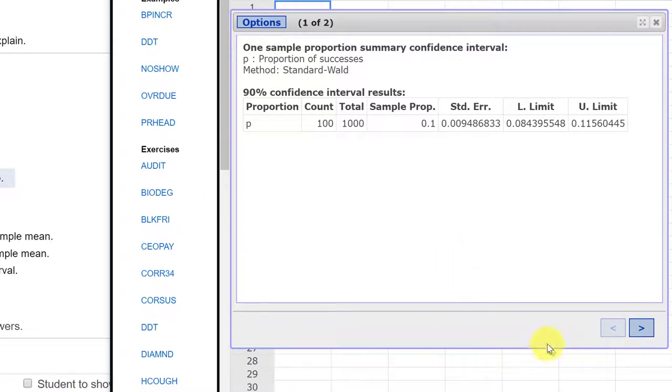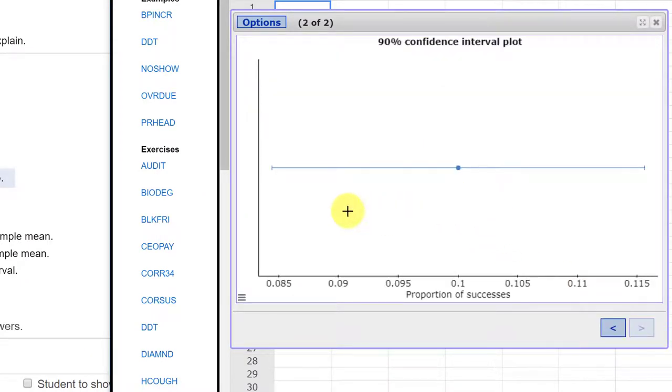And over here if we look at our stat crunch if we click the little error we get a confidence interval drawn and you can see it goes from roughly 0.085 to 0.115 and of course 0.05 is way over here so it's definitely not in that confidence interval.